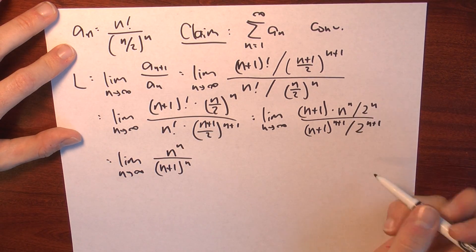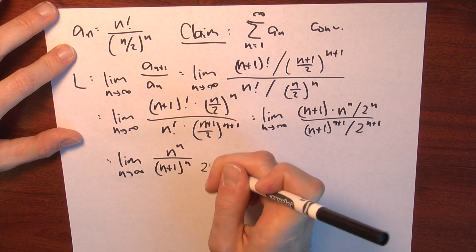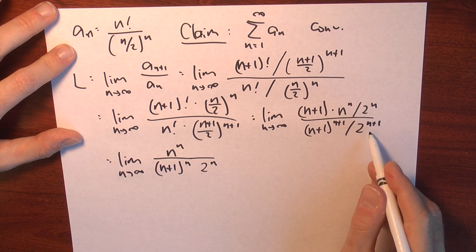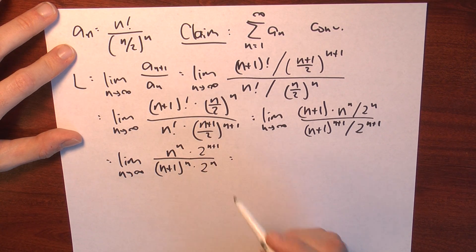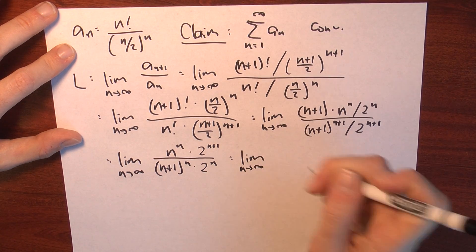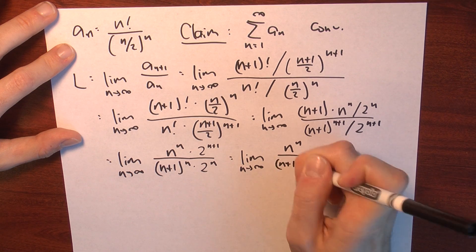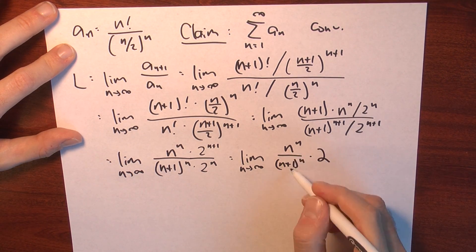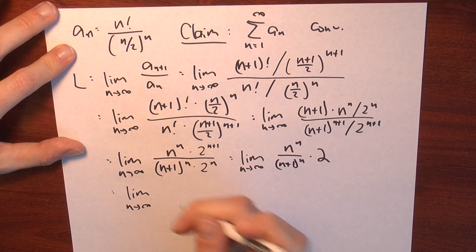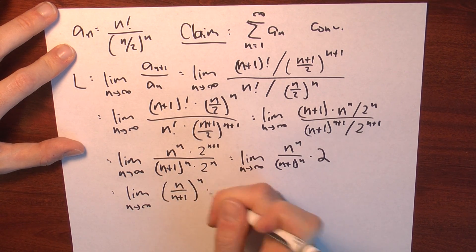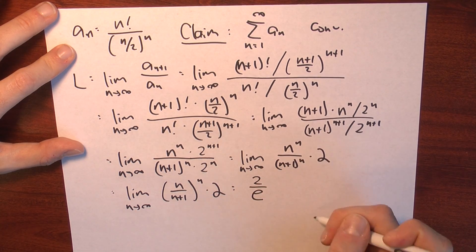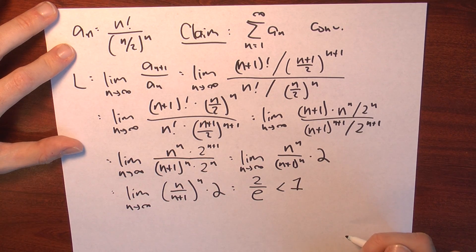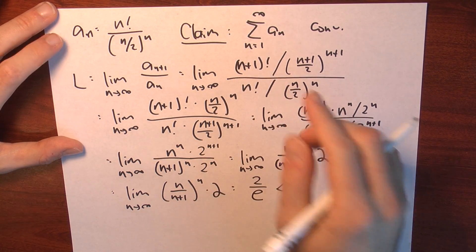In the numerator I still have n^n. I'm dividing by 2^n, so that goes to the denominator, and I'm dividing by 2^(n+1) in the denominator, so that comes to the numerator. I've got 2^(n+1) divided by 2^n, so everything except a single factor of 2 cancels. What I'm left with is n^n over (n+1)^n, times 2 — which is the limit as n goes to infinity of (n/(n+1))^n, times 2. We already saw that the limit of (n/(n+1))^n is 1/e, so this whole limit is 2/e. And 2/e is less than 1, so by the ratio test, this series converges.